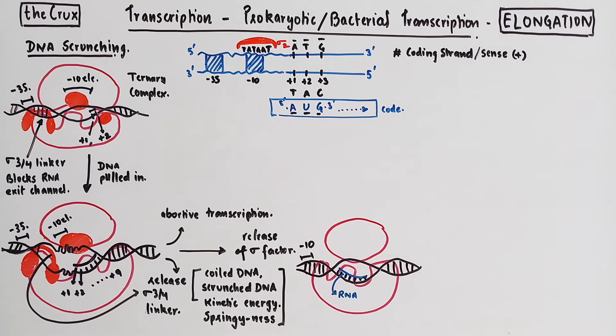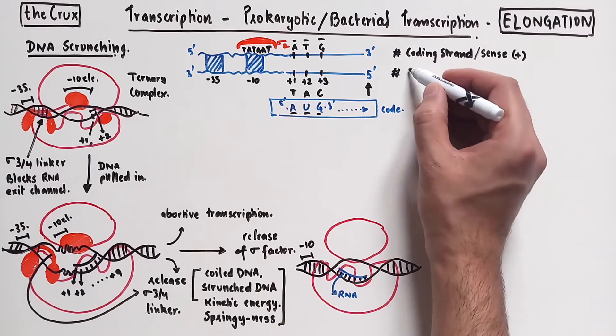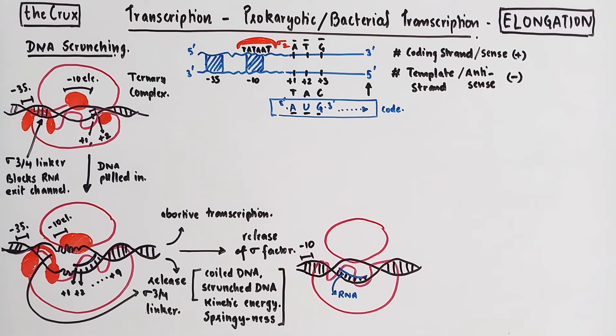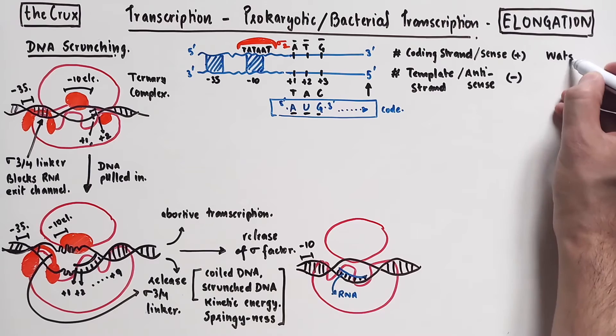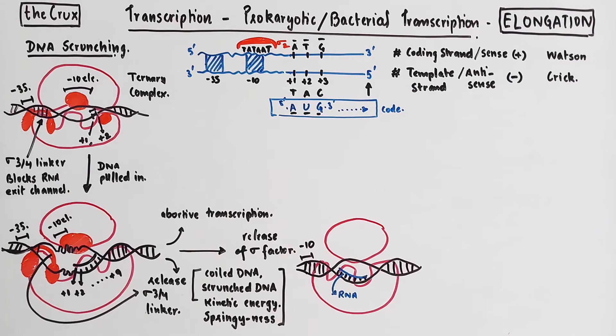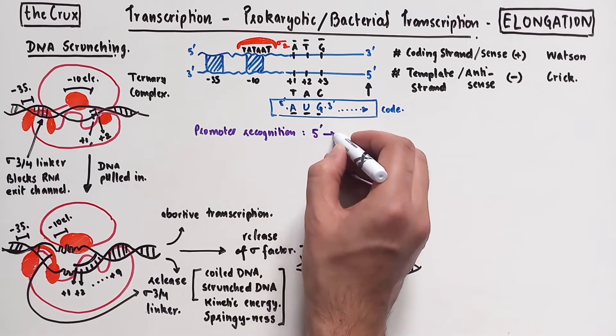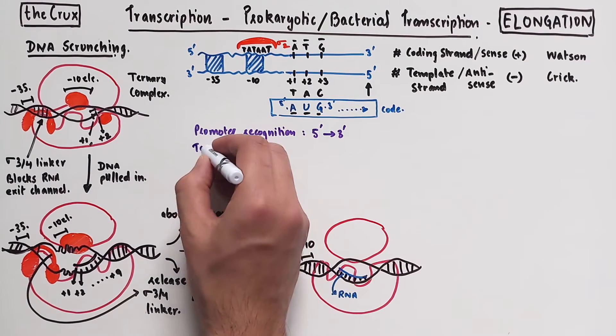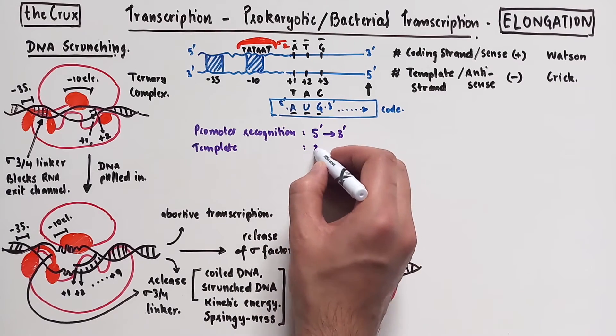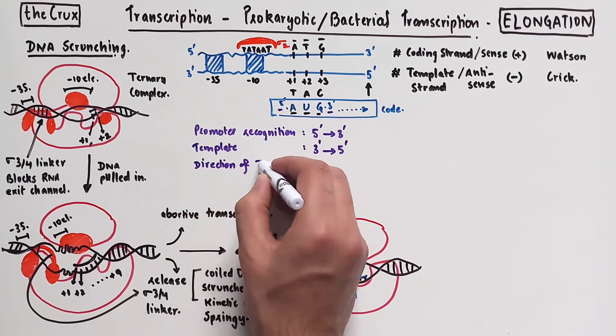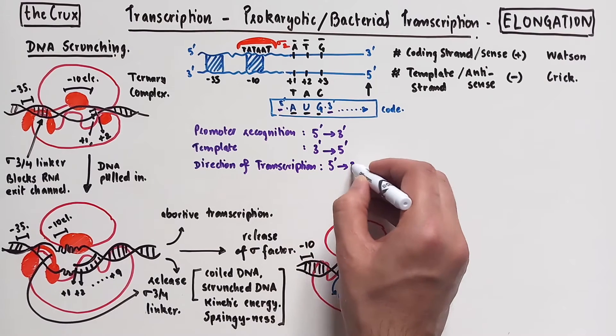People also like to use symbols like plus to refer to this strand. Because the polymerase makes the RNA using the 3' to 5' strand, this strand is also called the template strand or the anti-sense strand with a symbol minus or negative. In some places, you'll see these strands referred to as the Watson and Crick strand. The important technical note is that promoter recognition occurs on the 5' to 3' strand and the template utilized by polymerase to make RNA is 3' to 5', and the direction of the code that is made is 5' to 3'.